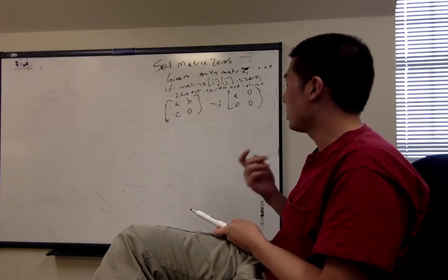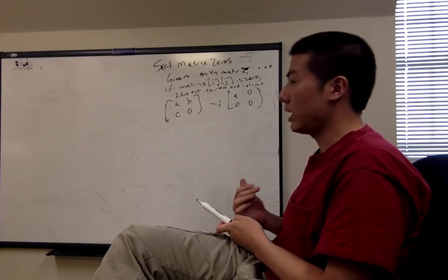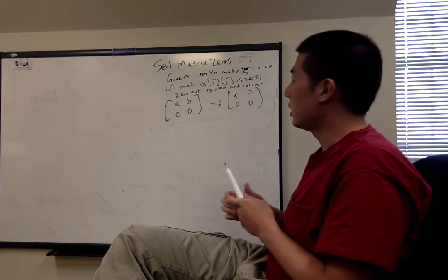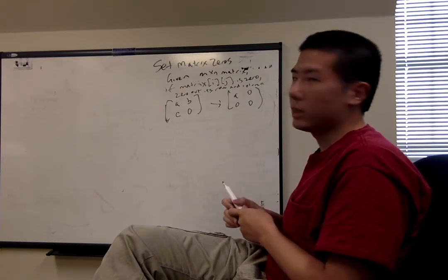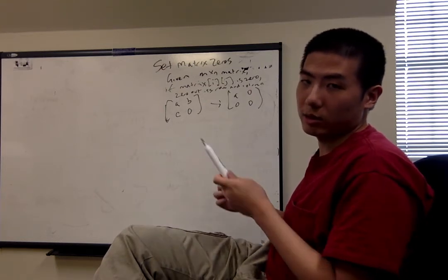So if we're going to use the first row and first column as placeholders, then we actually need to calculate whether there's a zero already existing in the first row and first column, so we need to do those separately.